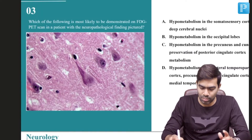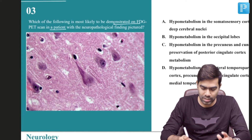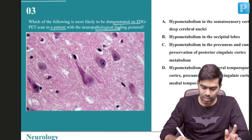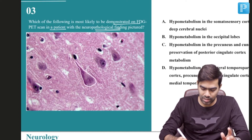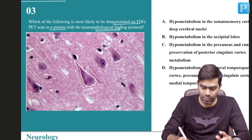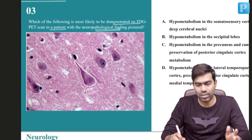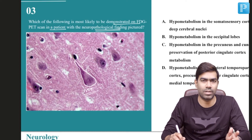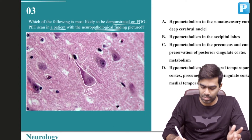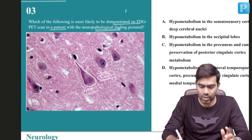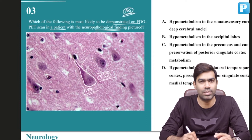Which of the following is most likely to be demonstrated on FDG PET scan in a patient with the neuropathological finding pictured below? What I see here is very characteristic of a neurofibrillary tangle (NFT), because it is flame-shaped and intraneuronal. NFTs are primarily intracytoplasmic and are made of aggregates of hyperphosphorylated tau proteins, and NFTs are quite specific for the diagnosis of Alzheimer's disease.